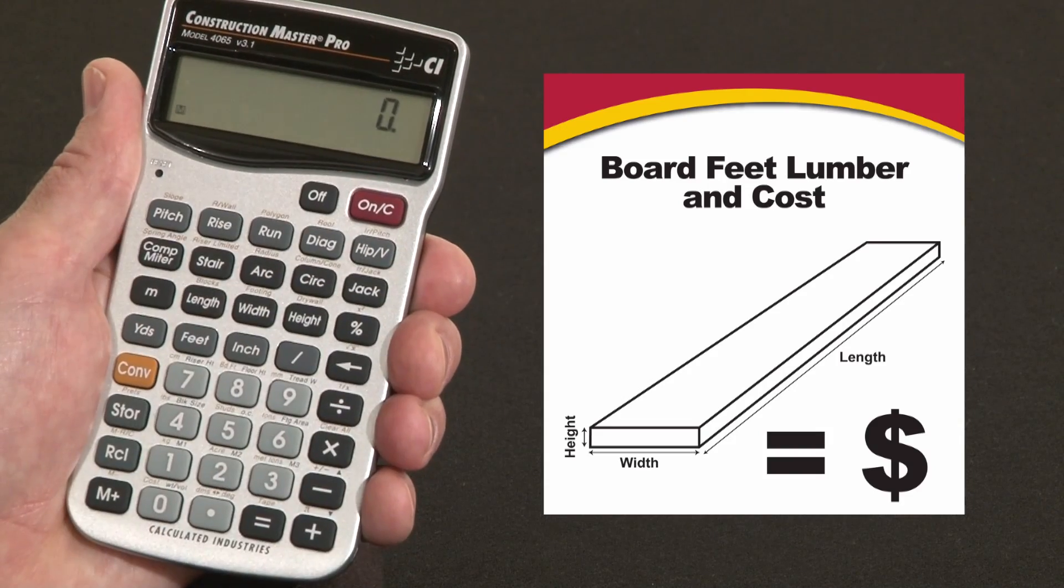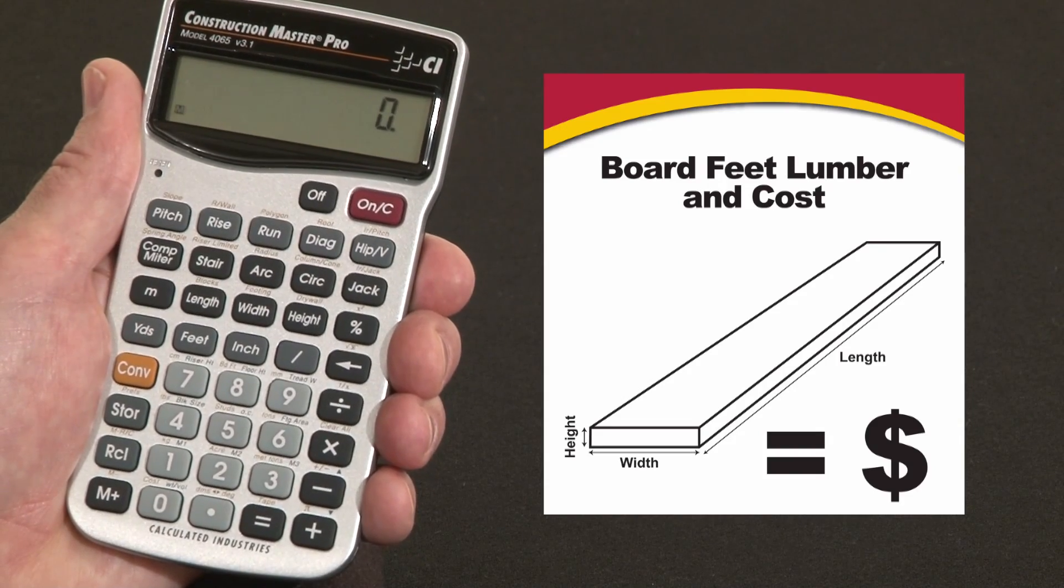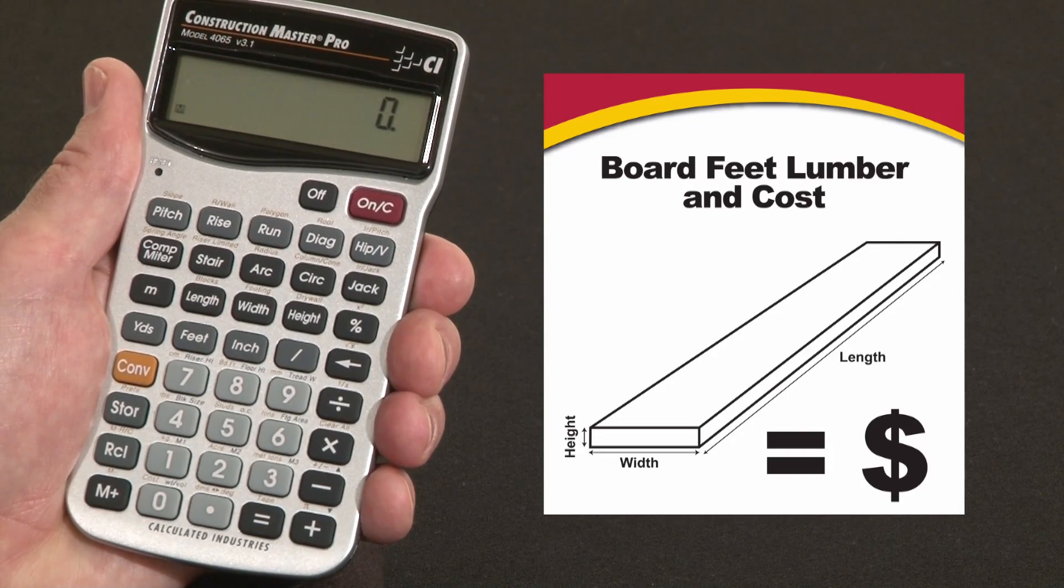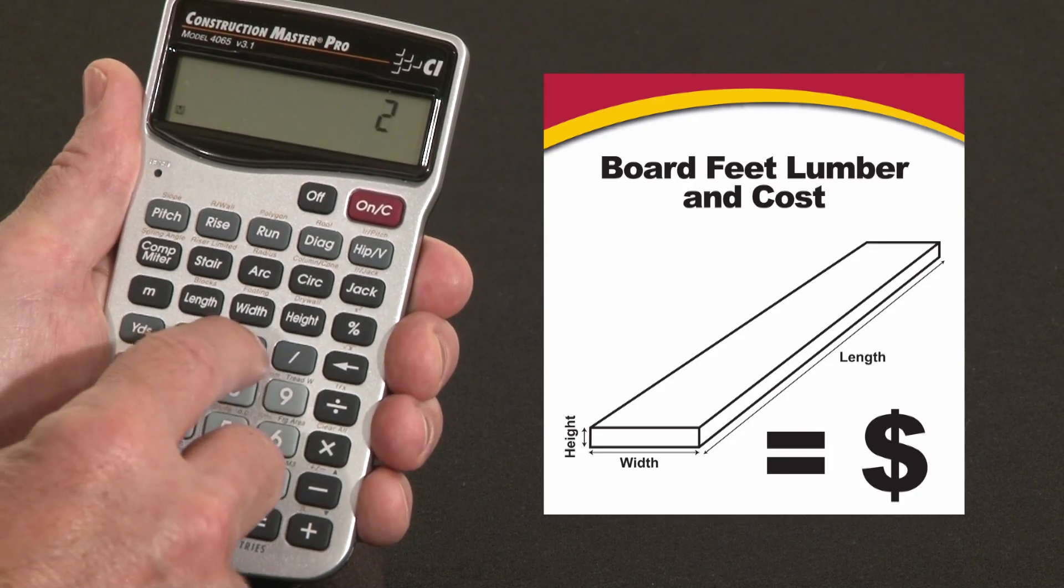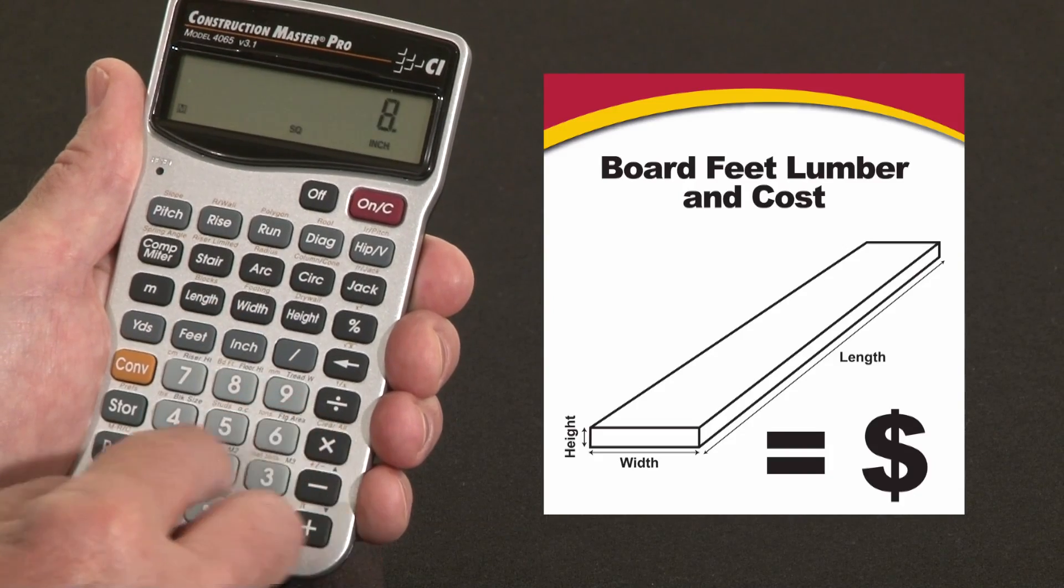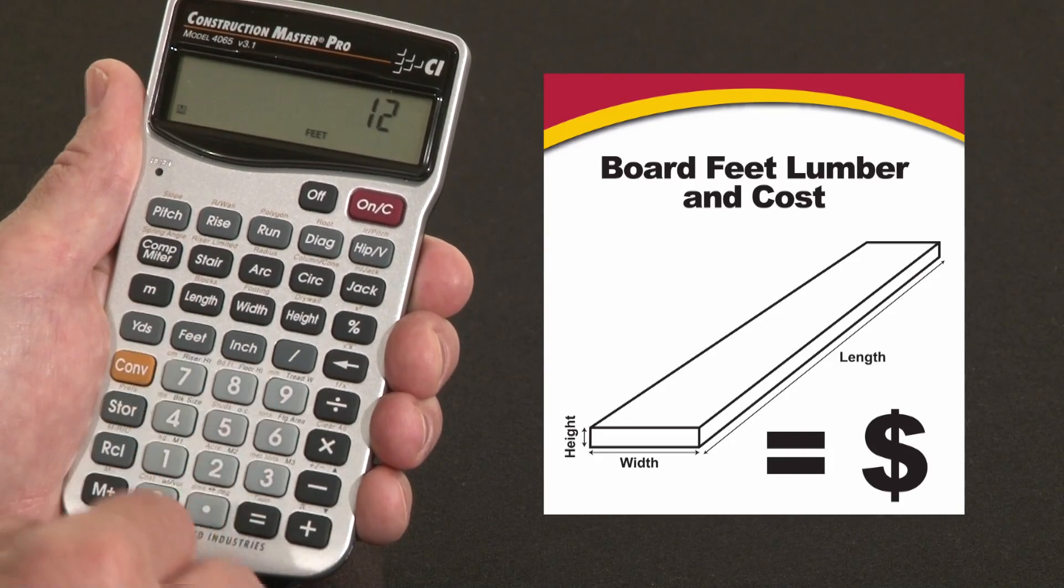You can also calculate board feet as a cubic volume number. Since we know that a board foot is 144 cubic inches, say you've got a 2 inch by 4 inch by 12 feet board.